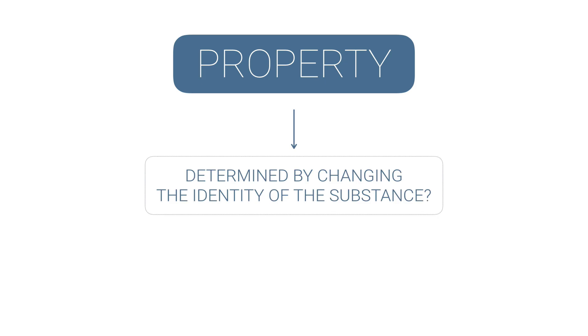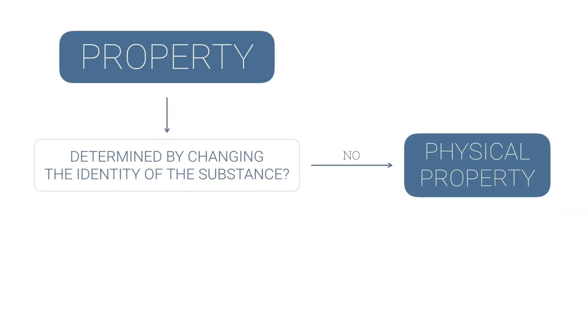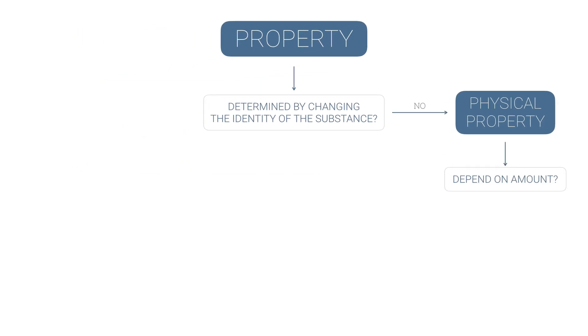So there are a couple ways to break down properties and really we get at it by asking ourselves a series of questions. The first question is: is this property determined by changing the identity of the substance? If the answer to that question is no, then we call this a physical property.